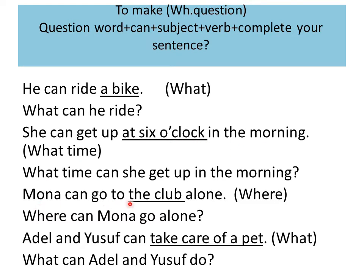Mona can go to the club alone. Where? So: where, then can, the subject is Mona, then the verb, then complete your sentence. Where can Mona go alone? Mona can go to the club alone.